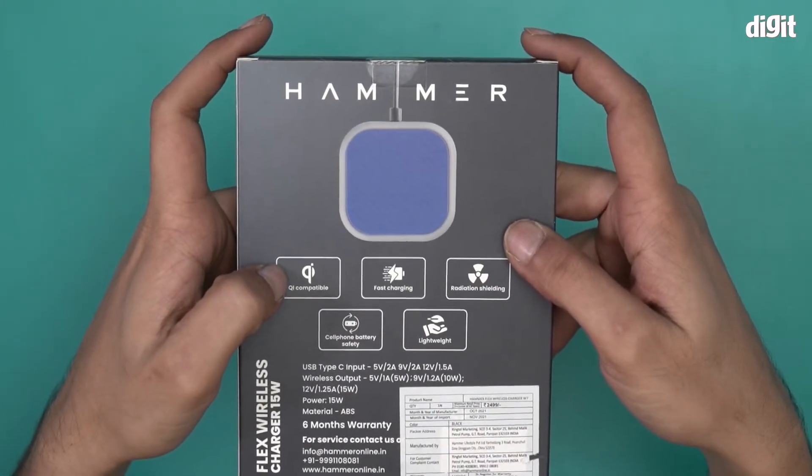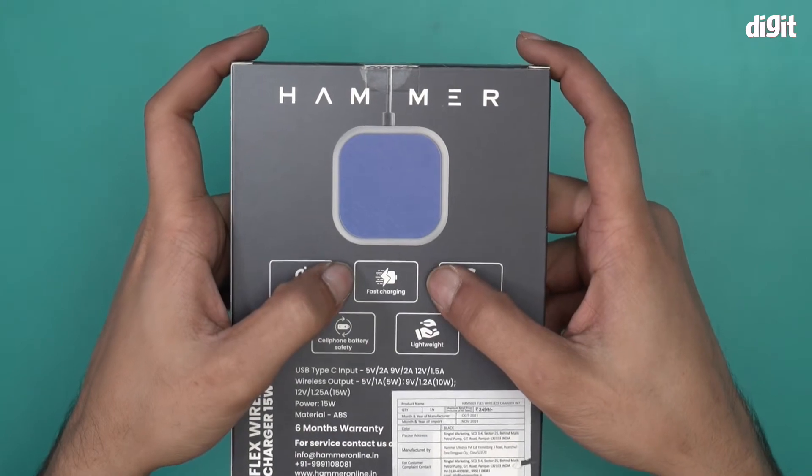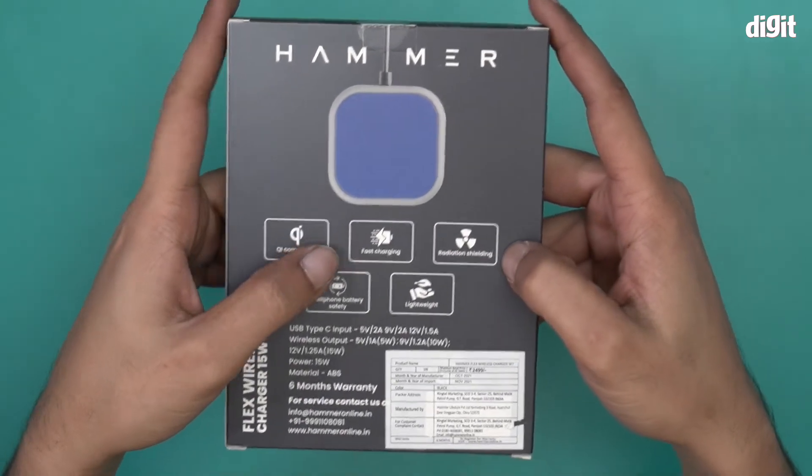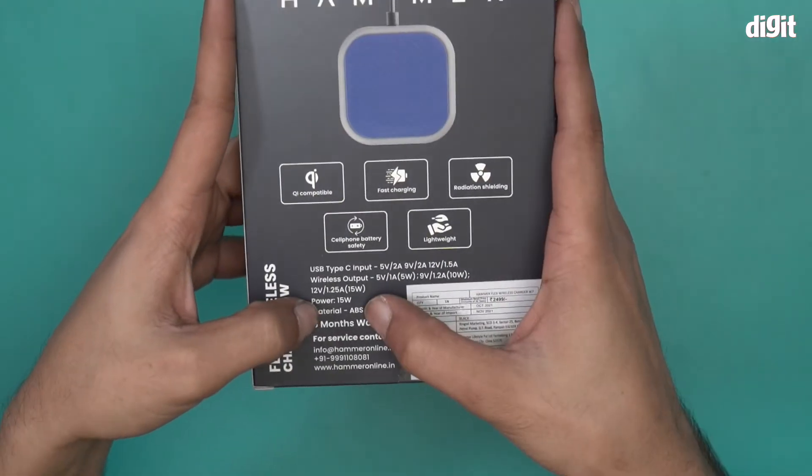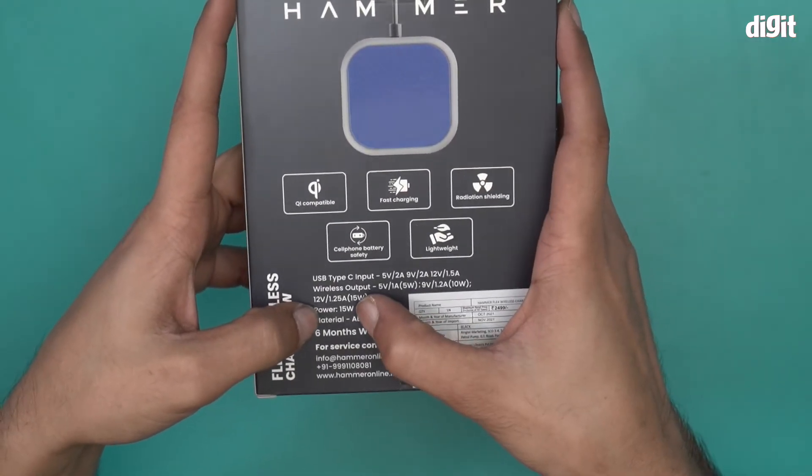This is Qi compatible, comes with fast charging, that's 15 watts of fast charging, radiation shielding, cell phone battery safety, and it is also pretty lightweight. This is made out of ABS plastic material. It has a 15 watt power output as mentioned earlier.